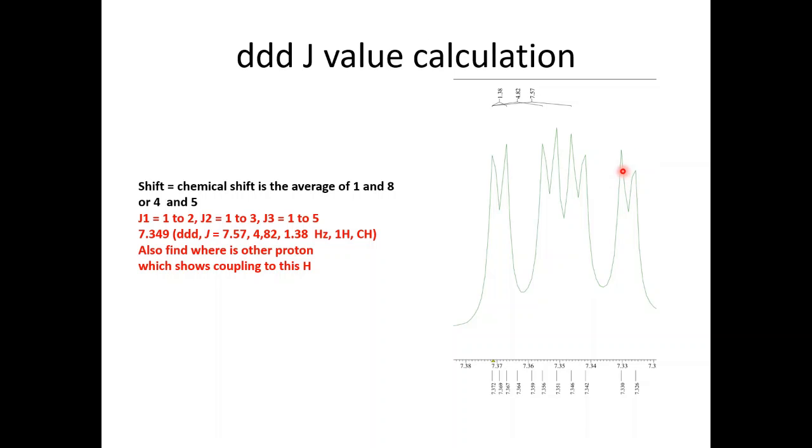1.4 to the other proton. Click on this one, click on this. If you get 1.4 here, then report that J value. Sometimes it came from experimental error 1.38. Also take care about the other J value.